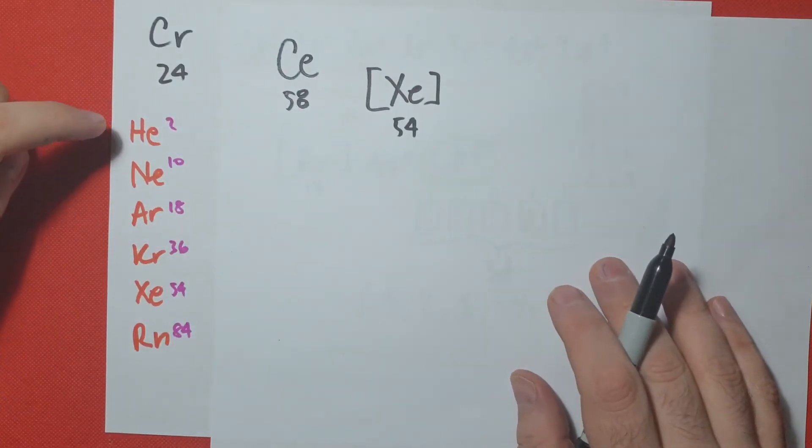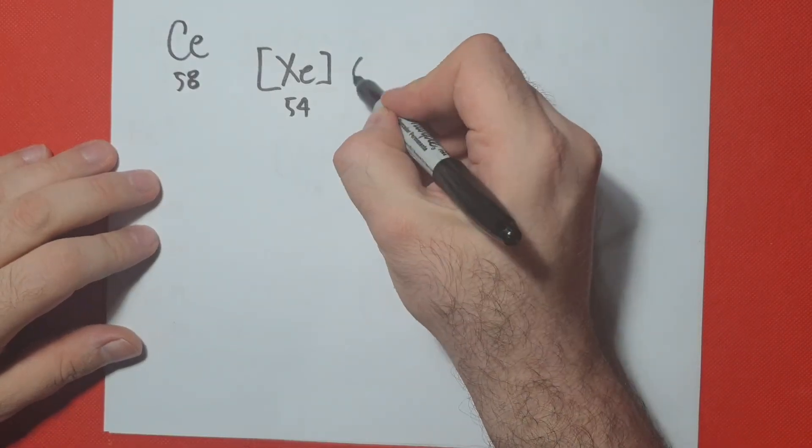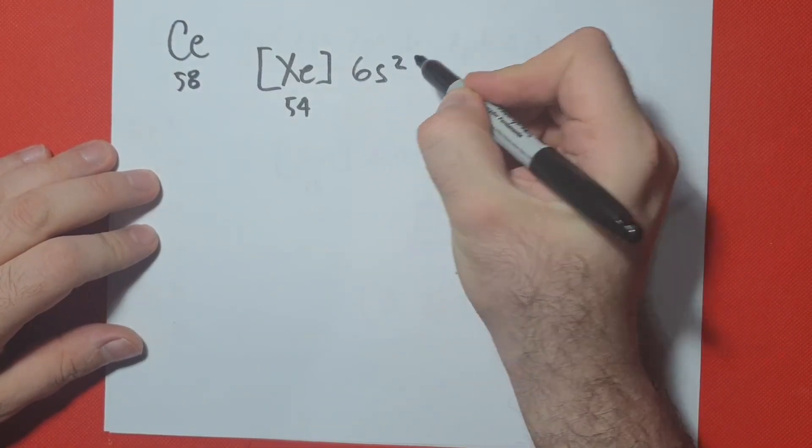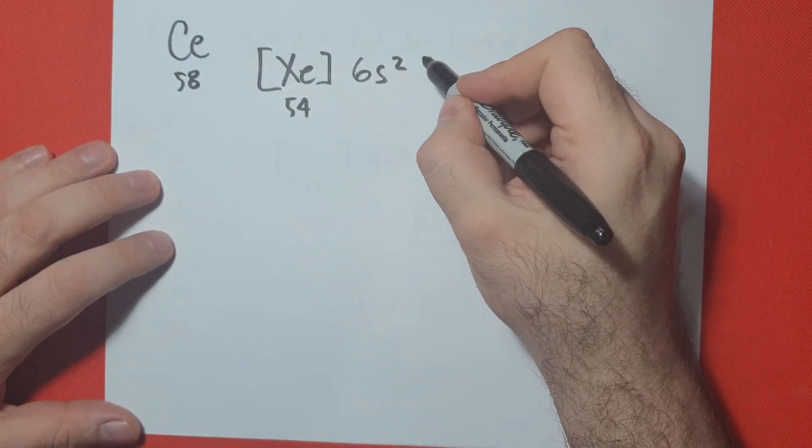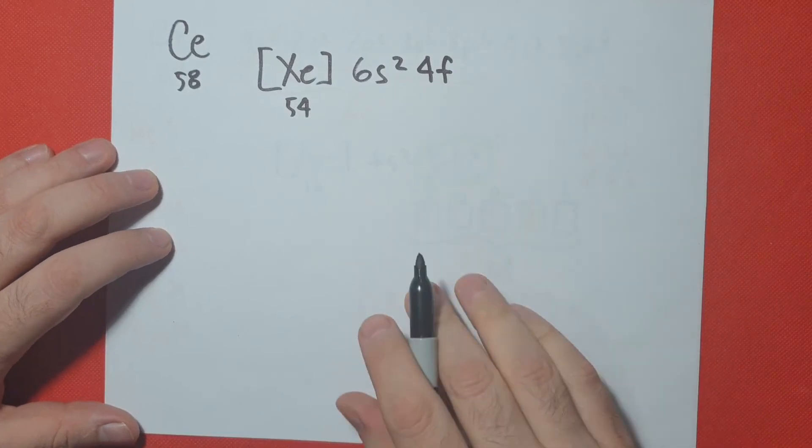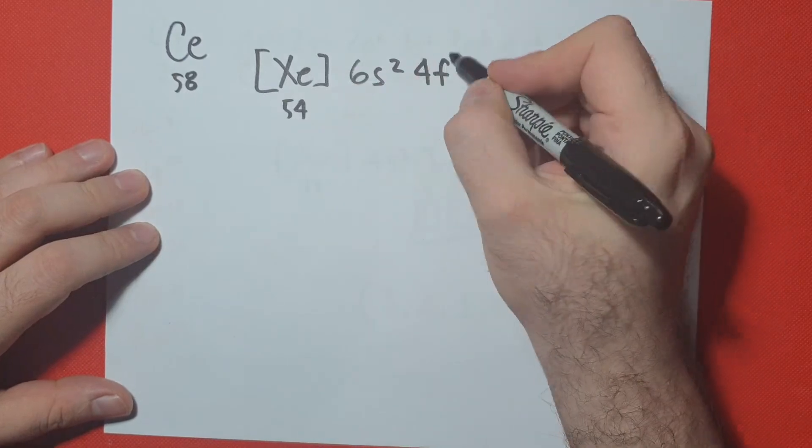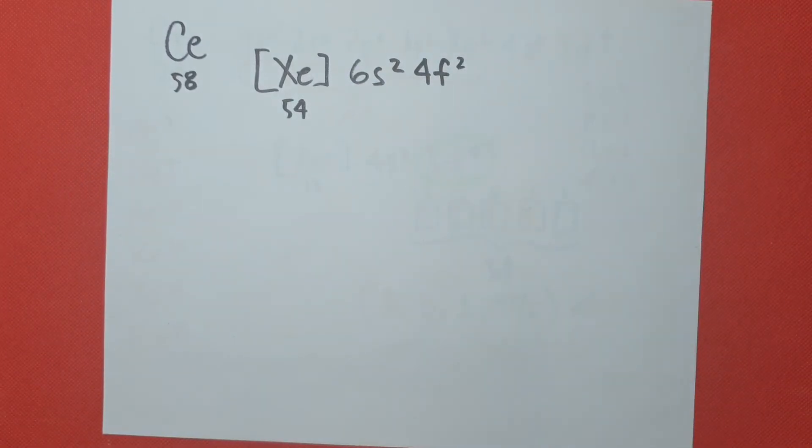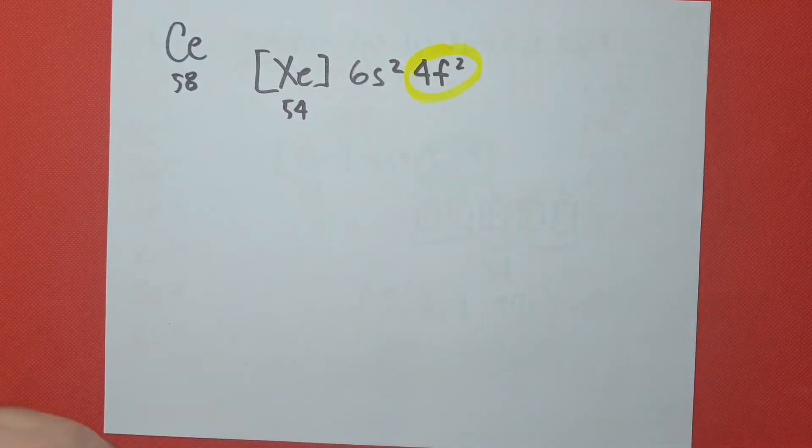So xenon is on period 5. So my next orbital is 6s2. And after 6s, if we remember aufbau's diagram, which you should remember or know how to draw, comes 4f. So after we draw 4f, we're still missing 54 plus 2 is 56 plus 2 is 58 for 4f2. So the one we're focusing on is this orbital for f.